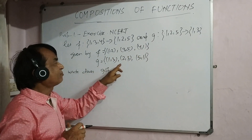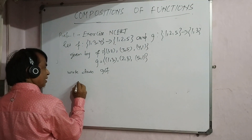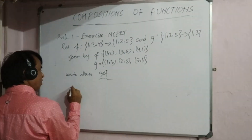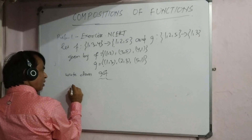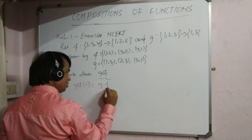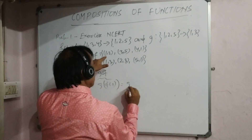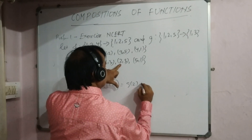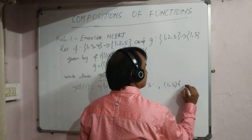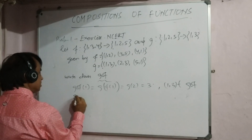Given f: {1→2, 3→5, 4→1} and g: {1→3, 2→3, 5→1}, we have to write down gof. The domain of f is {1, 3, 4}. So gof(1) = g(f(1)) = g(2) = 3. Therefore (1, 3) belongs to gof.